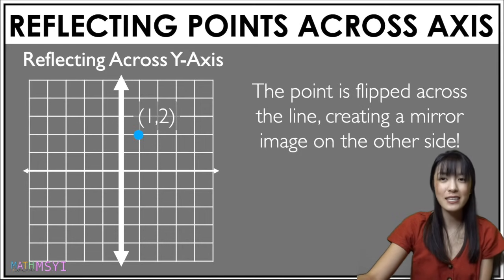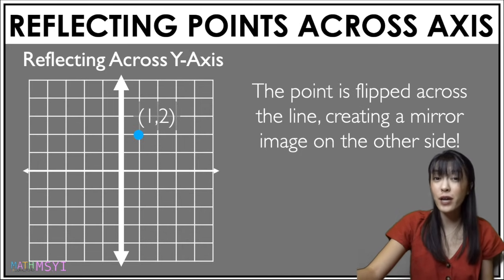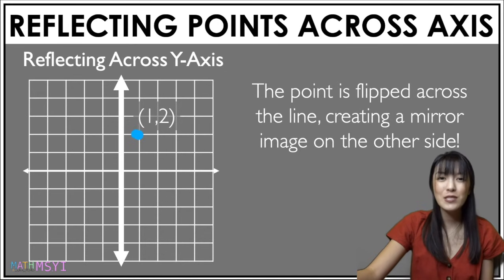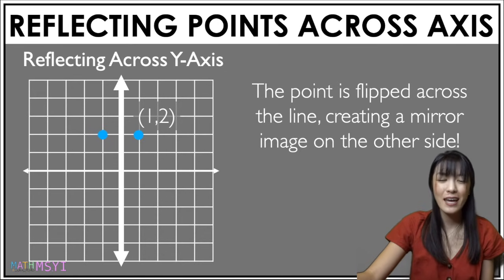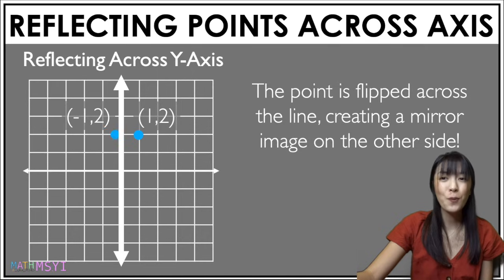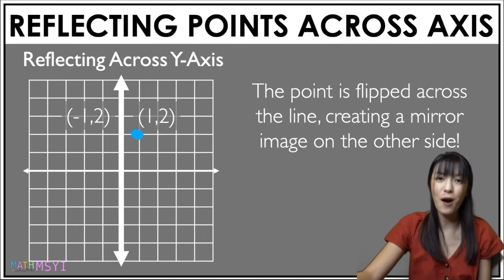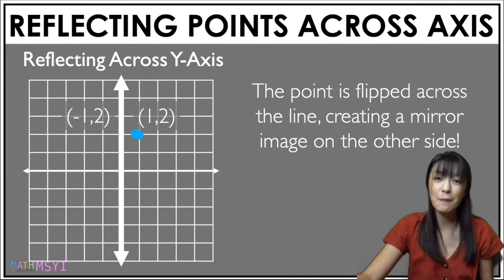Let's look at this animation. Our point is 1, 2 and it's reflecting across our y-axis. Our new point is negative 1, positive 2 — our x value becomes the opposite and our y value stays the same.